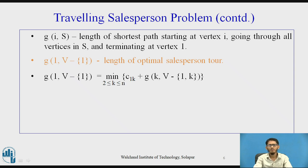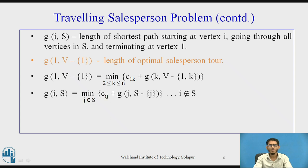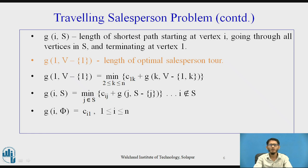Simplifying, the recurrence becomes: g(i, S) = minimum over j in S of [c_ij + g(j, S minus {j})], for vertices i that do not belong to S. The base case is g(i, ∅) = c_i1, meaning the cost of the edge from vertex i to vertex 1, for i ranging from 2 to n.